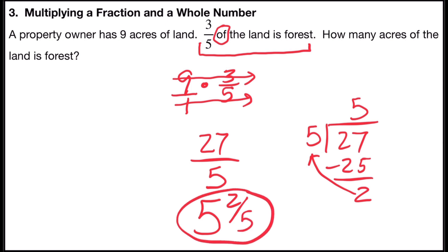There is a shortcut. Whenever you multiply a whole number by a fraction, it's always going to be the whole number multiplied by the numerator. Nine times three is 27. Put back over the denominator.